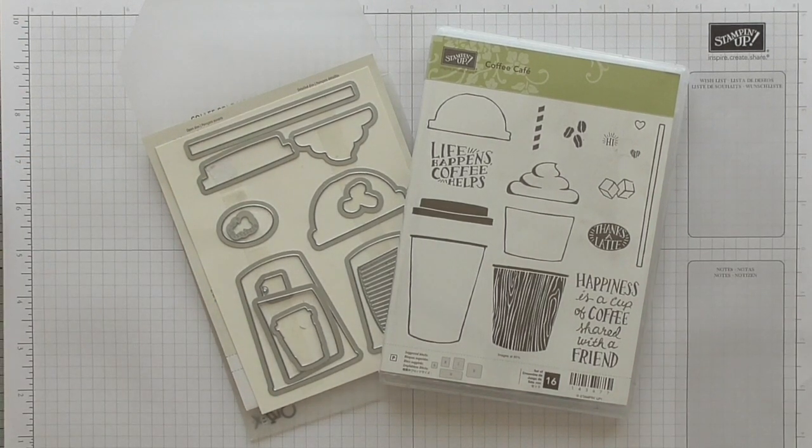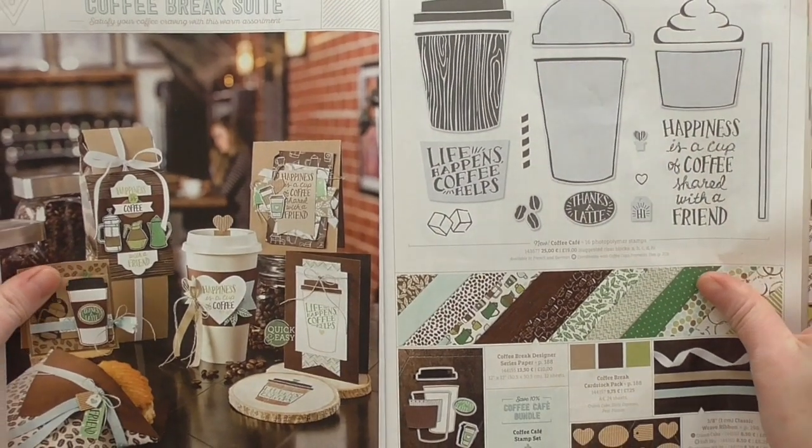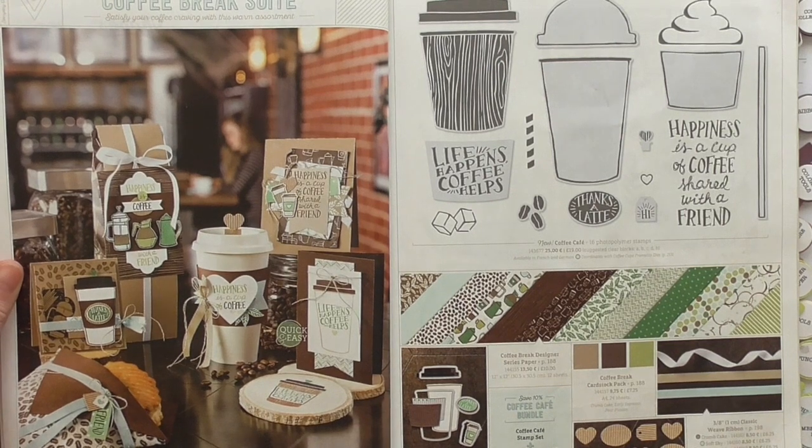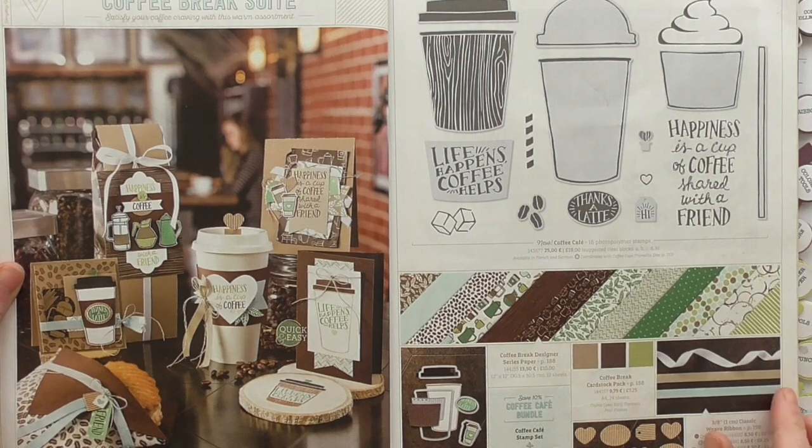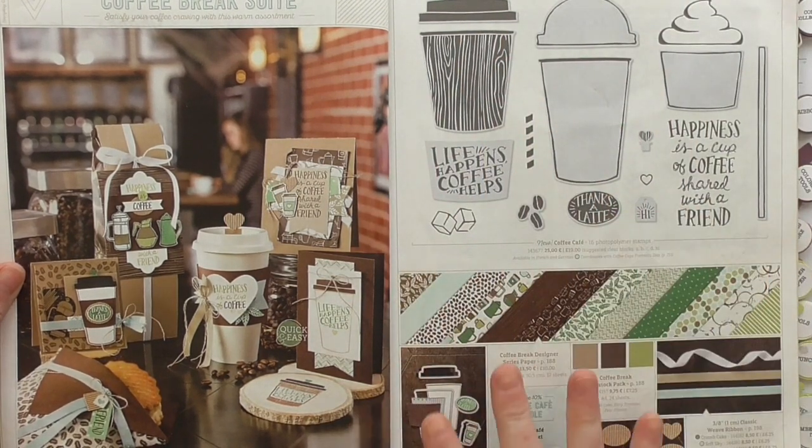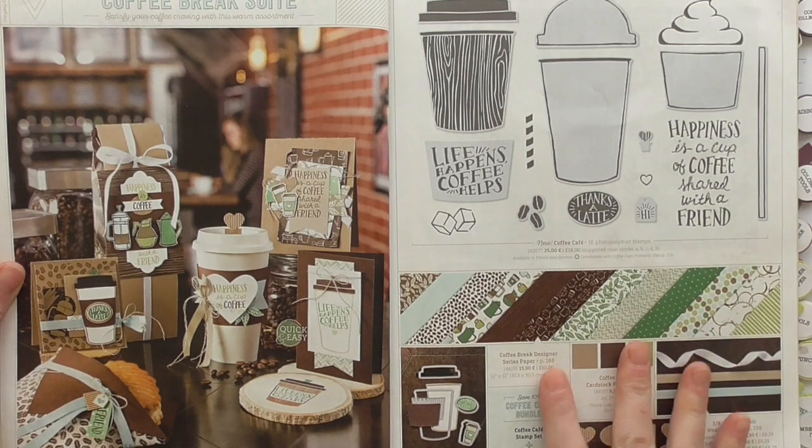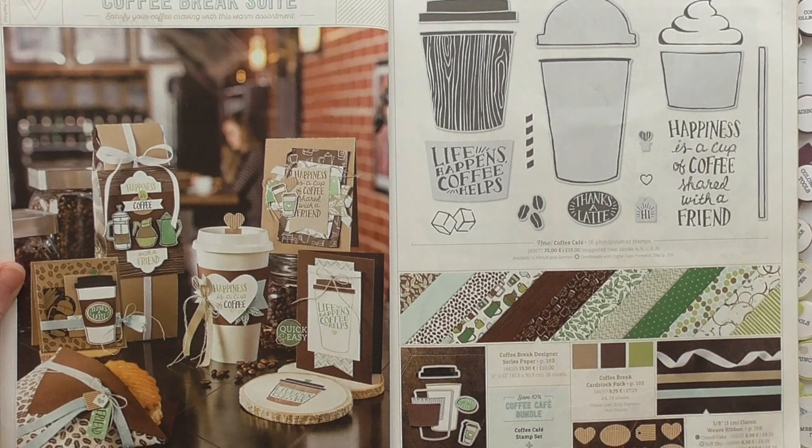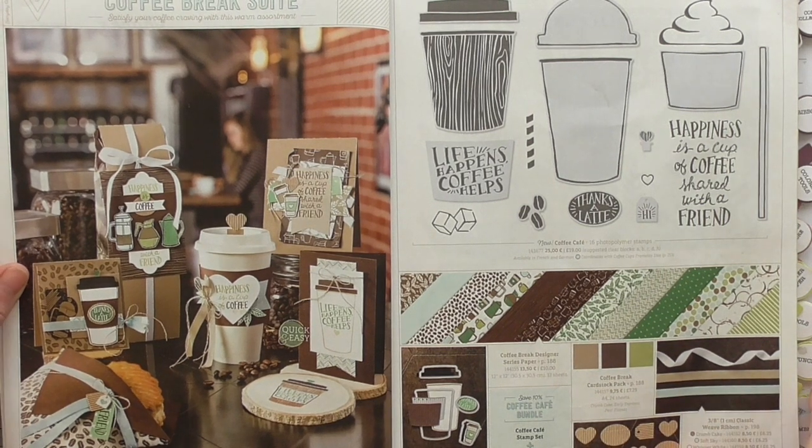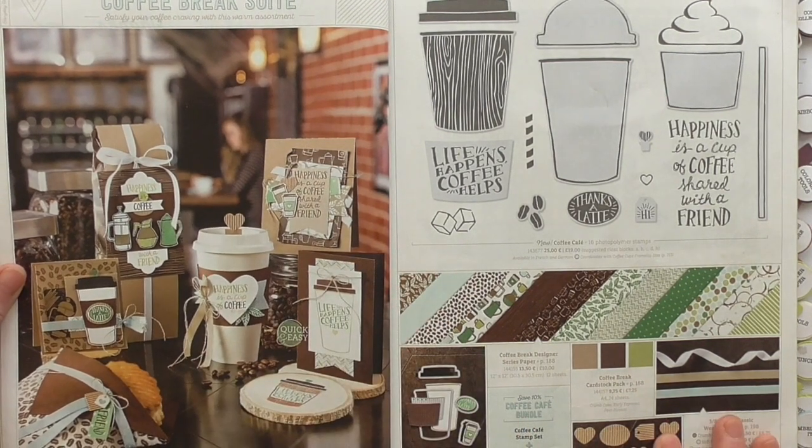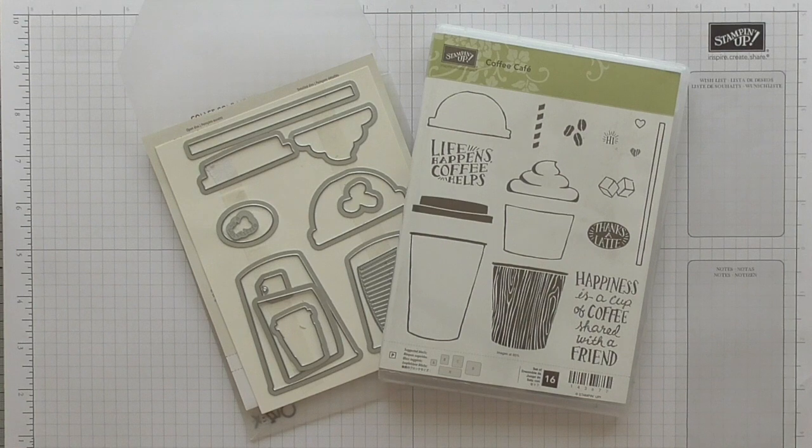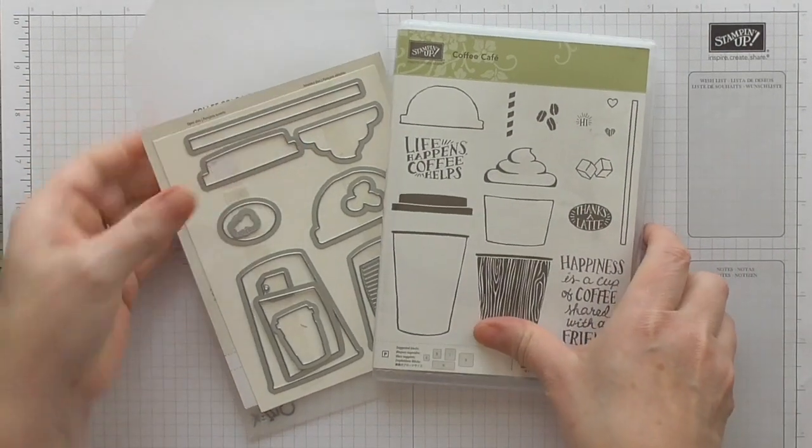This is from the Coffee Break Suite, which is amazing. I absolutely love it. I don't know why I didn't buy it sooner. It's in the annual catalogue on pages 30 to 31. We have a stamp set and coordinating thinlets, the DSP Designer Series Paper, coordinating ribbons, all sorts of lovely fun things. Today I've got my inspiration direct from the catalogue and this lovely coffee cup that's been decorated here. I'm going to create a coffee cup treat project.